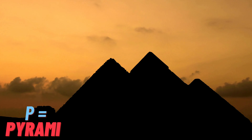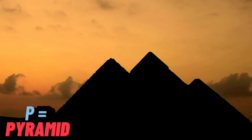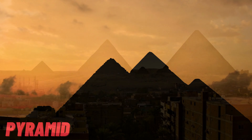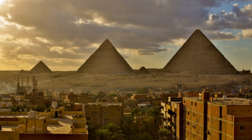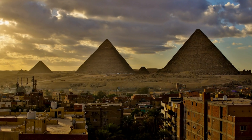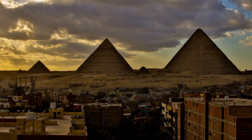P is for Pyramid, a triangle-based tower, faces that slope, reaching for power. Built by ancient hands, their stories unfold, Pyramid's shape, a history untold.